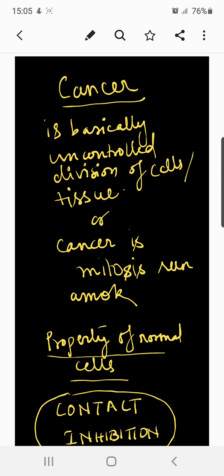Basically, cancer is a dreadful disease. It is one of the chief killers today. It is most common in people among 40 to 60 years of age but may occur at a younger age also. It commonly originates in the tissues in which the cells are regularly replaced by mitosis. These tissues include skin, lining of digestive tract, reproductive organs, lungs and liver.